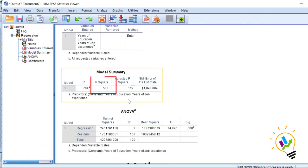Now, here directly we will see the r square value. The r square value is 0.583.